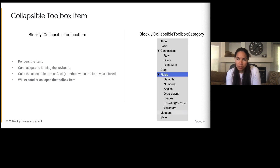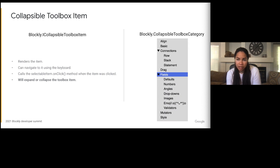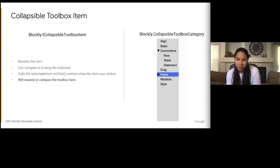The third kind of toolbox item is a collapsible toolbox item. These are items that hold other toolbox items. They do everything that a selectable toolbox item does, but will also collapse or expand when a user clicks on them or uses the left and right arrows. You can create a collapsible toolbox item by implementing the ICollapsibleToolboxItem interface or returning true from the isCollapsible method. For an example of this in core, you can look at the collapsible toolbox category.